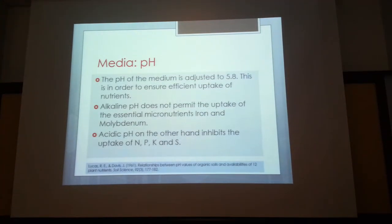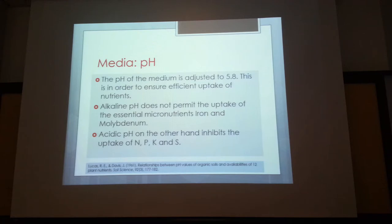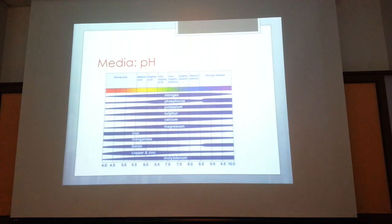pH is essential for plants to uptake nutrients. If soil or media is too acidic or too alkaline, nutrients present cannot be absorbed. For example, iron under acidic conditions forms a sulfate, while under alkaline conditions it may form a compound difficult for the plant to absorb — the nutrient is there but cannot be taken up. This is why pH is critical for media.